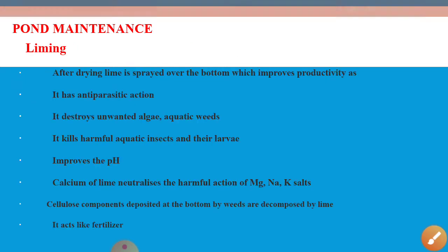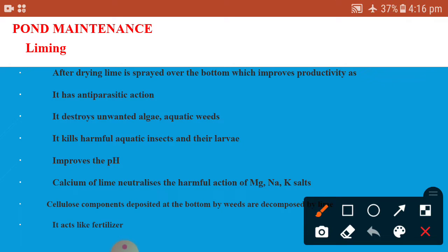The second important point is liming. After draining and drying, lime is sprayed over the bottom, which improves the productivity of the pond. Liming has an anti-parasitic action.